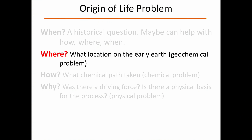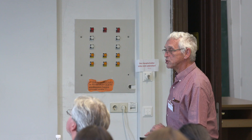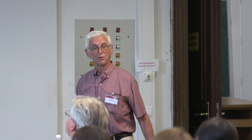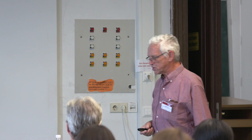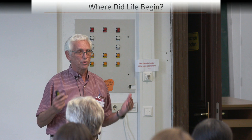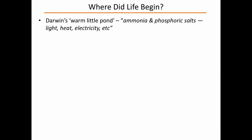Where? What location on the early Earth did life appear? The first person to make some proposal about that was Charles Darwin, who showed amazing intuition. He talked about a warm little pond with ammonia and phosphoric salts and energy — light, heat, electricity. Remarkable forward thinking, preceding the Miller-Urey experiment by quite a bit.